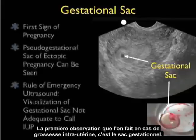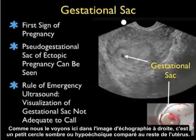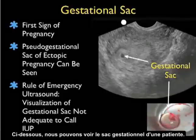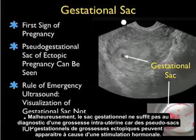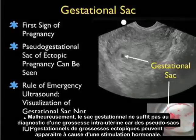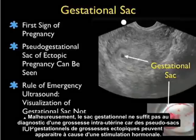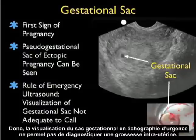The first finding that will occur during an intrauterine pregnancy is a gestational sac. As seen here in the ultrasound picture, it's a small round circle that's dark or hypoechoic in relation to the rest of the uterus. We also see a gestational sac specimen with a translucent membrane type appearance. Unfortunately, the gestational sac is not diagnostic of an intrauterine pregnancy, as a pseudo-gestational sac of ectopic pregnancy can be seen from hormonal stimulation. Visualization of a gestational sac alone is not adequate to call an intrauterine pregnancy.